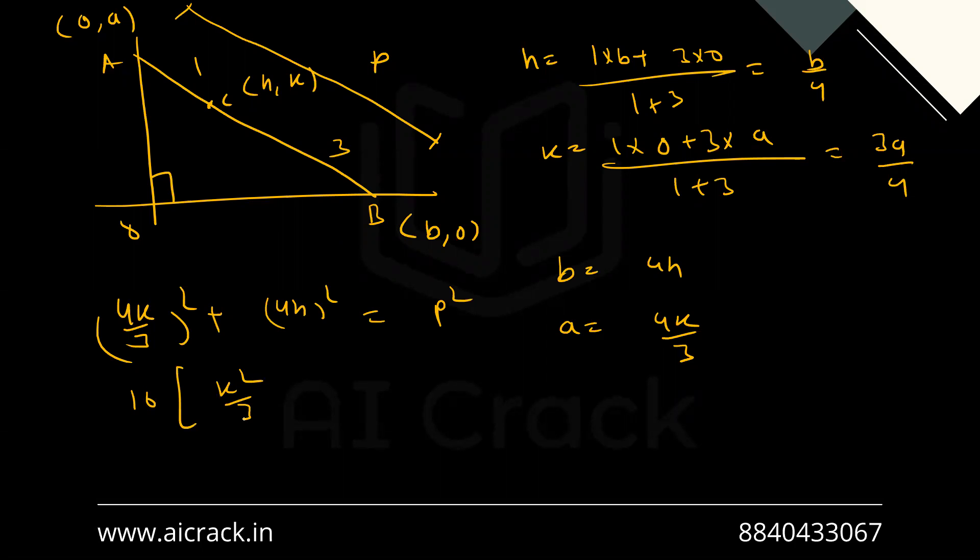Not three, it's nine. So that would give me 16 times k square plus nine h square equals to nine p square.